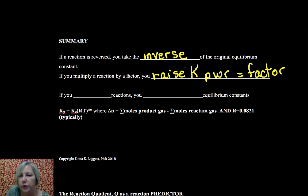So if you multiply by two you square K, if you multiply by three you cube K, and so forth. If you add reactions, you multiply equilibrium constants.